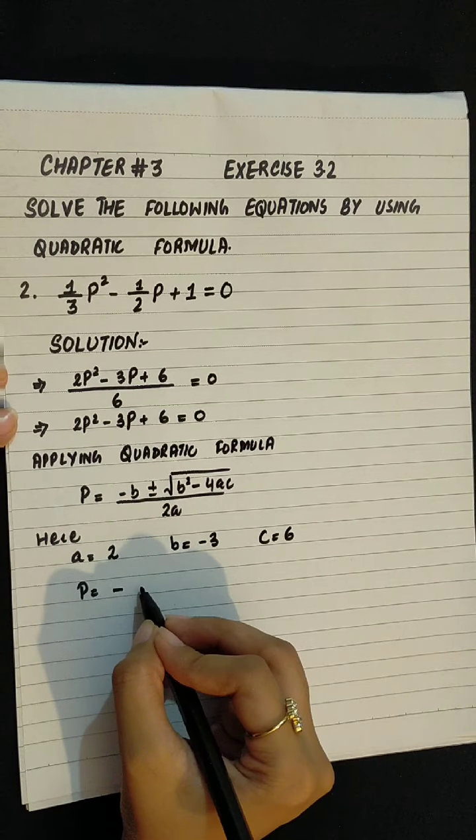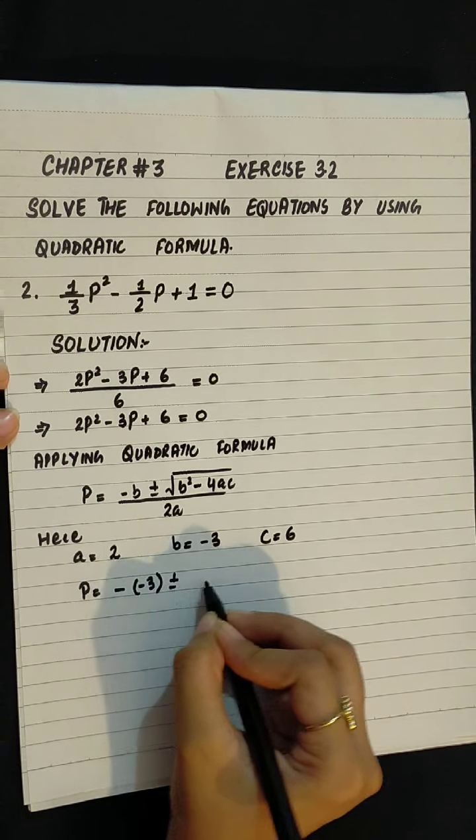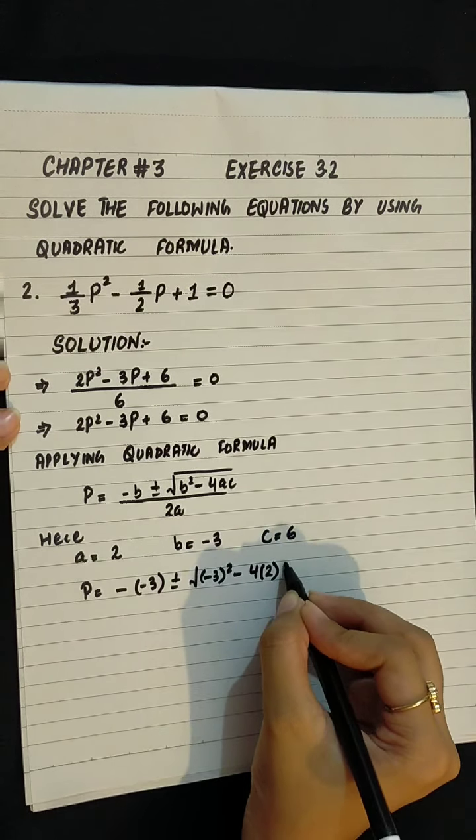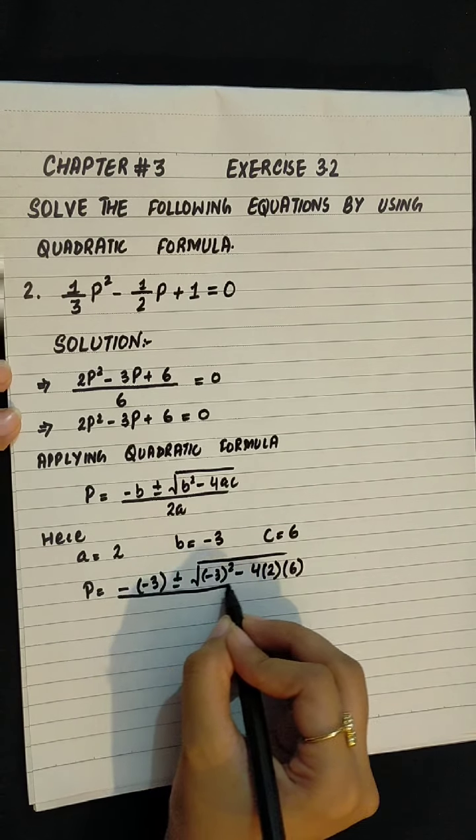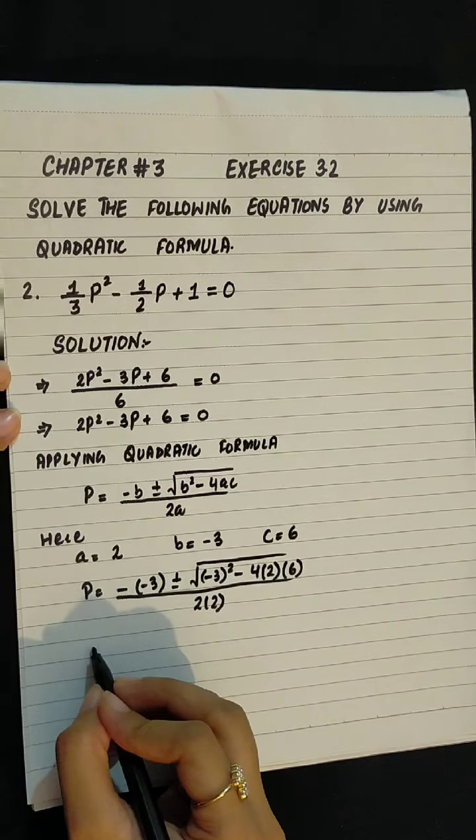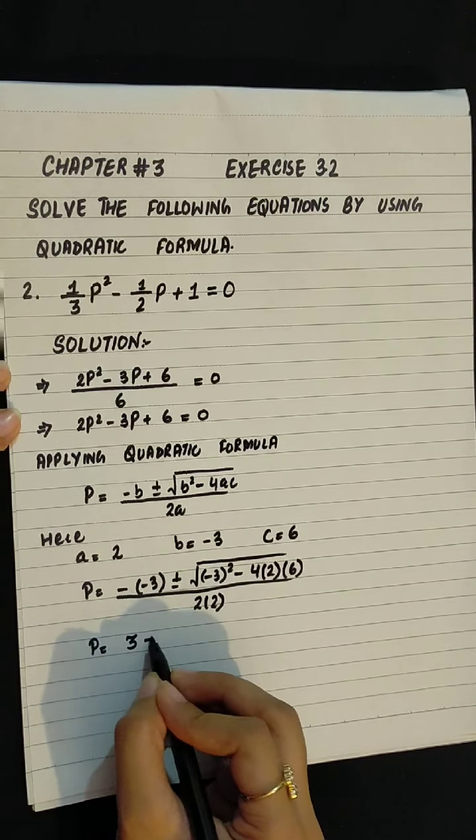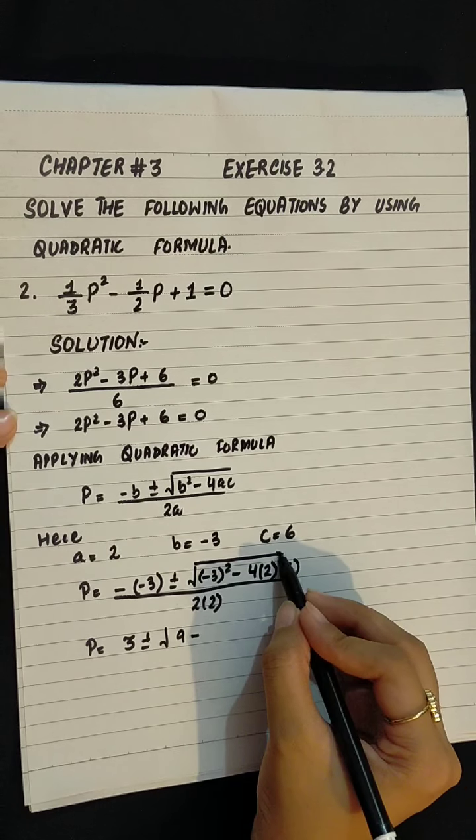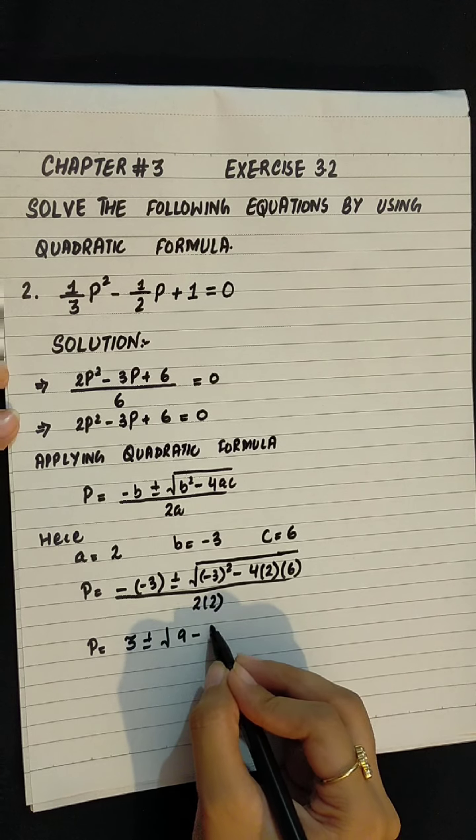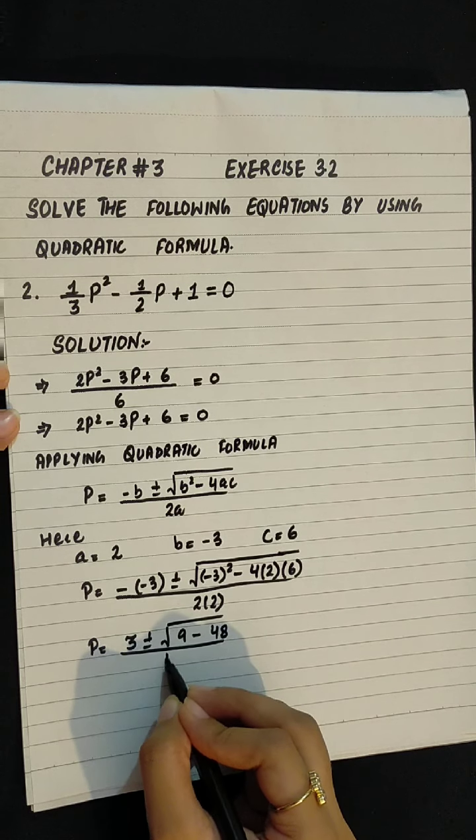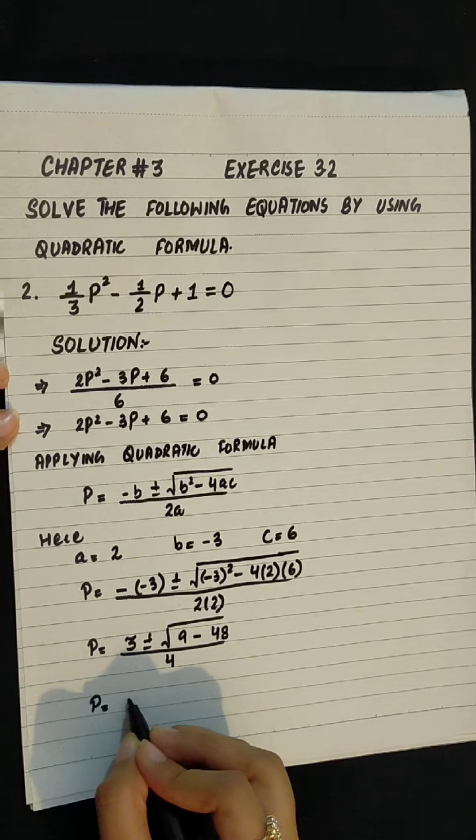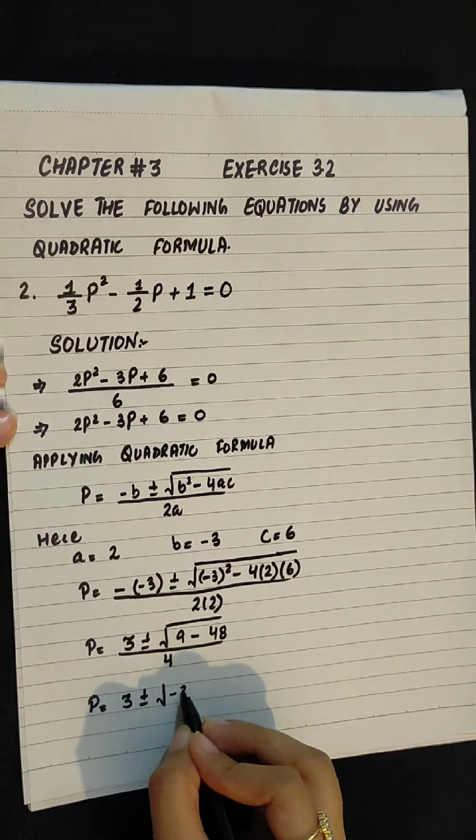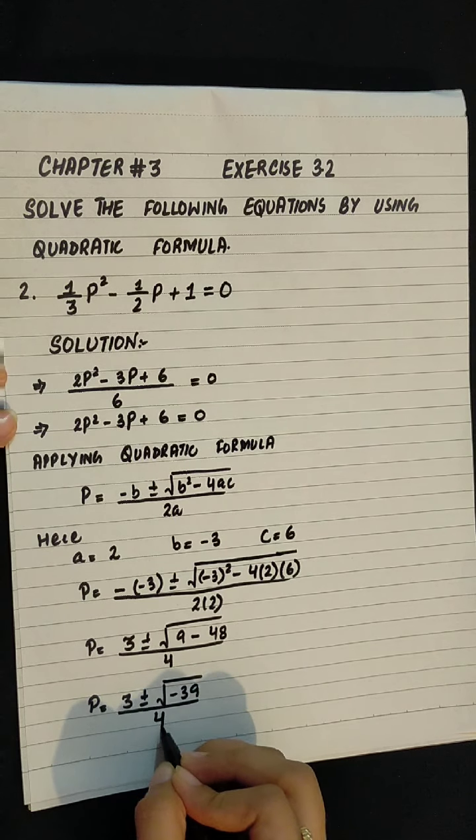Let's substitute the values. p = -(-3) ± √((-3)² - 4(2)(6)) / 2(2). This equals 3 ± √(9 - 48) / 4, which is 3 ± √-39 / 4.